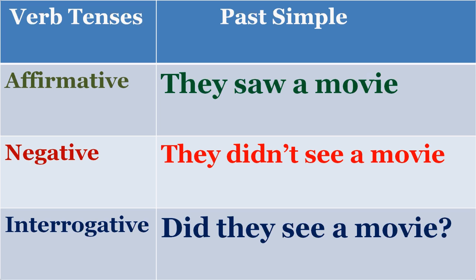Then we have simple past tense — it has happened earlier. Affirmative: 'They saw a movie.' Negative: 'They didn't see a movie.' Interrogative: 'Did they see a movie?' or 'Did they see a movie yesterday?' This is how you form affirmative, negative and interrogative for past simple. All these sentences happen in day-to-day circumstances.